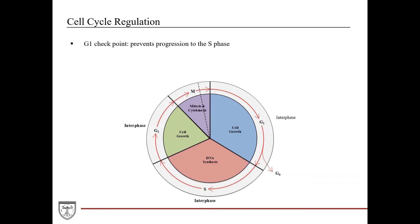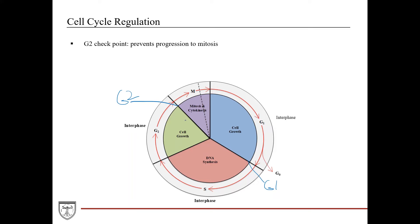You have the G1 checkpoint, which prevents progression to the S phase, making sure everything is properly prepared for DNA synthesis. The G2 checkpoint is right after the G2 phase and prevents progression to mitosis—easy to remember since G1 is after G1 and G2 is after G2. At the G2 checkpoint you're making sure everything's in order for cell division: proper machinery, intact DNA, no mutations.